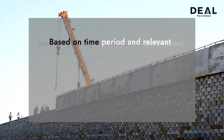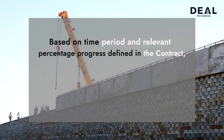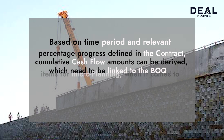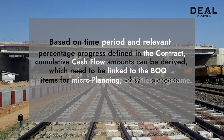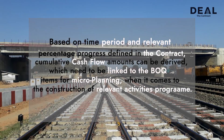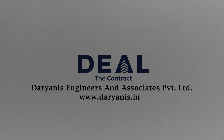Based on the time period and relevant percentage progress defined in the contract, cumulative cash flow amounts can be derived, which need to be linked to the BOQ items for microplanning when it comes to the construction of relevant activities program. In the following videos, we will elaborate more details on other aspects of contract administration. For more details, please visit our website, Daryani's Engineers & Associates Private Limited. Thanks for listening!